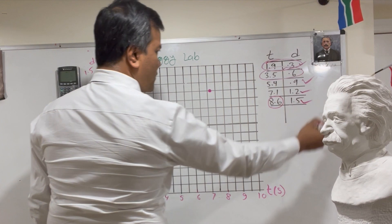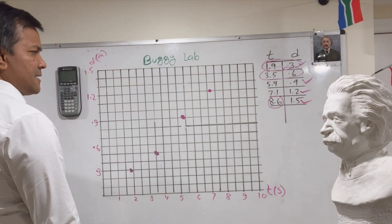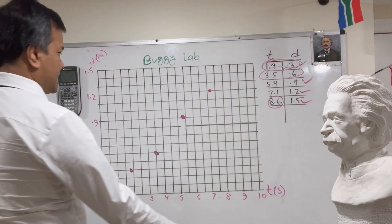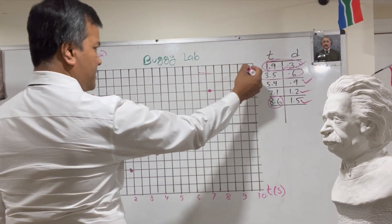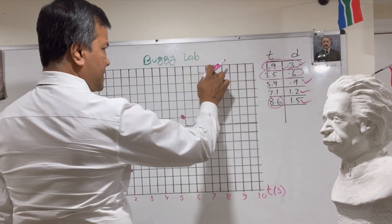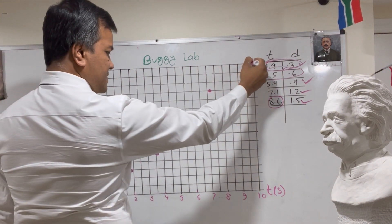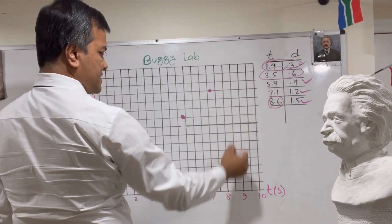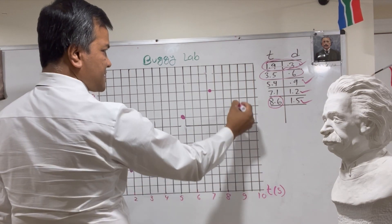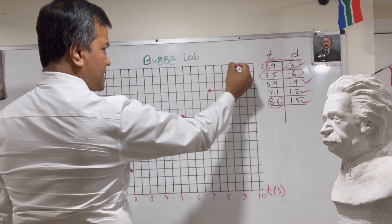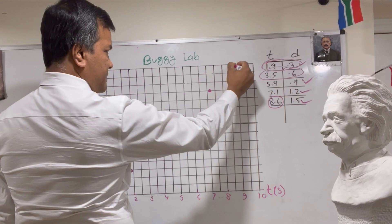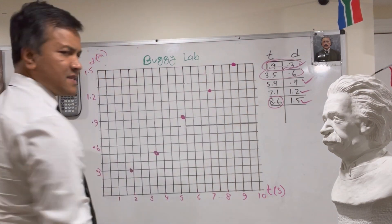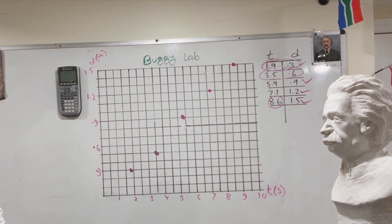The last point is 1.5 meters at 8.6 seconds. On the axis: 8 is here, 8.5 is here, so 8.6 is right here. These are all the points, and now we're going to use the ruler to draw the best-fit line.